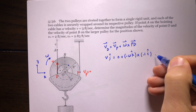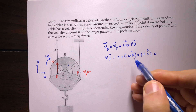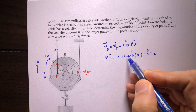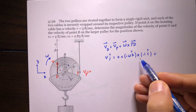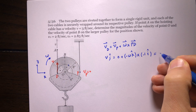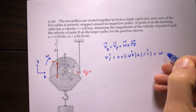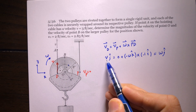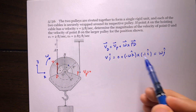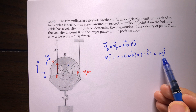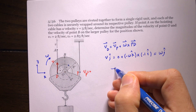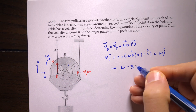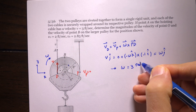After computing the cross product, the two negatives cancel and we get v = ω. Since v is given as 3 feet per second, omega equals 3 radians per second.